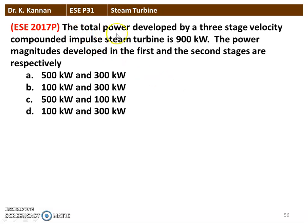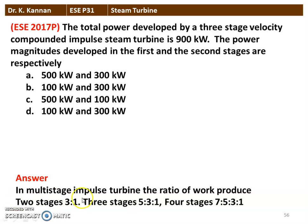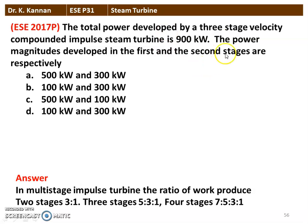The next question — the total power developed in a three-stage velocity compounded impulse turbine is 900 kW. The power magnitude of the first and second stages are? For a multi-stage velocity compounded impulse turbine, the ratio of work produced: two-stage is 3:1; three-stage is 5:3:1; four-stage is 7:5:3:1. For this three-stage turbine with 900 kW total, the first stage produces 500 kW and the second stage produces 300 kW.